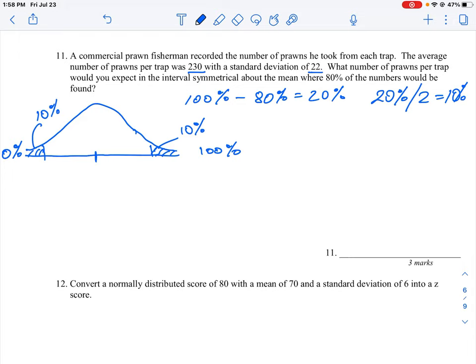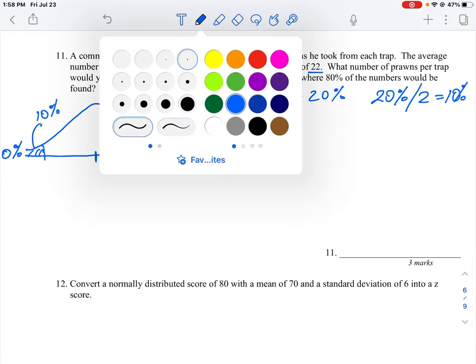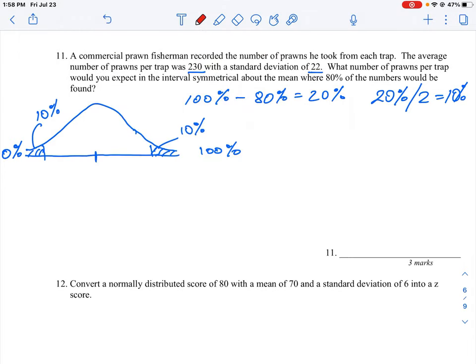So that means that from the 10% onwards, I'll just do this in a different color here, this is the percentage of where the prawns are in terms of what we're trying to capture. We know that the middle of this prawn here is 230, that's the mean. So what we're trying to figure out is what is this number here on the low end that starts at the 10%, and then what is this number here at the very end of the other side, which is 100% minus 10%. This is actually the 90% point in the curve.